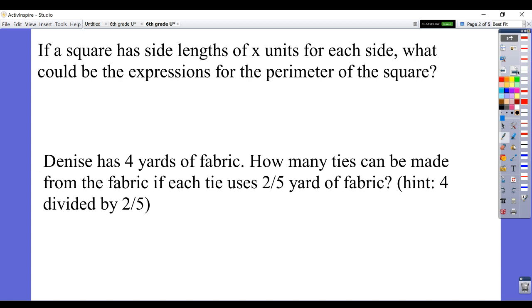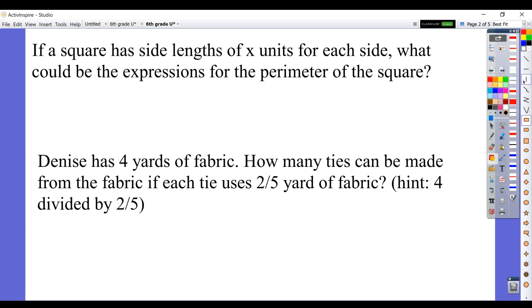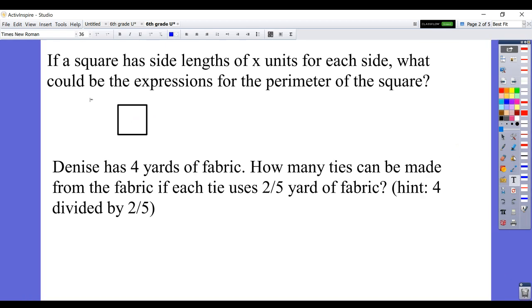Next one. If a square has side lengths of x units for each side, what could be the expressions for the perimeter of the square? So when they say expressions, there means, you know, there's some different multiple ones that you could have. So again, we're talking about perimeter. So we know with a square, all the side lengths are equal. So you could write it as x plus x plus x plus x. You could write it as 2x plus 2x or 3x plus x. Usually, we'd finally get it to a simplified form. You know, combine like terms making it 4x.